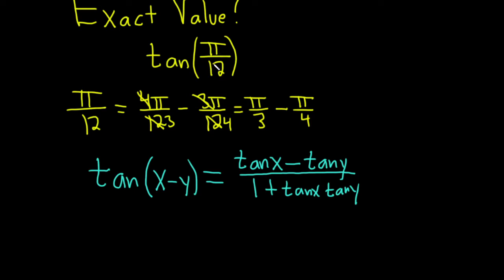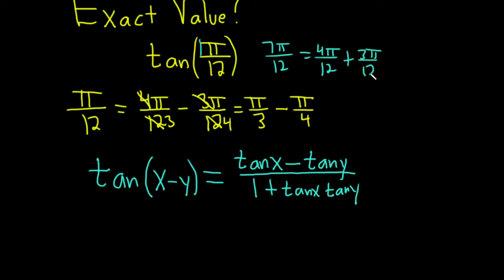Step one in a problem like this is to figure out how you can write pi over 12 as a difference or sum of two familiar angles. Because pi over 12 is just one pi, the difference formula seemed better. If it were something like 7pi over 12 instead, you could do 4pi over 12 plus 3pi over 12 and use the sum formula.